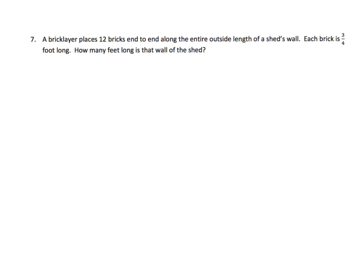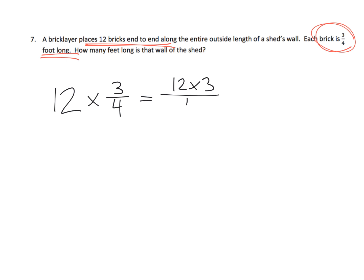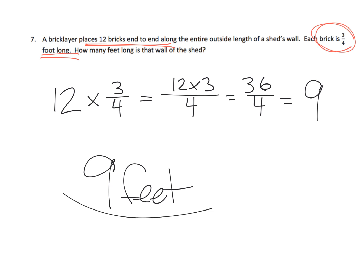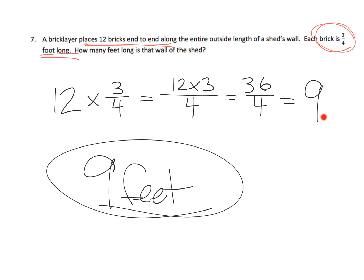Last example: a bricklayer places 12 bricks end-to-end along the outside length of a shed's wall. Each brick is three-quarters of a foot long. How many feet long is the wall? We have 12 copies of three-fourths, so 12 times three-fourths equals 36 fourths, which equals 9. The wall is 9 feet long. Parents and teachers: make sure your students understand how we made that jump from 36 fourths to 9.